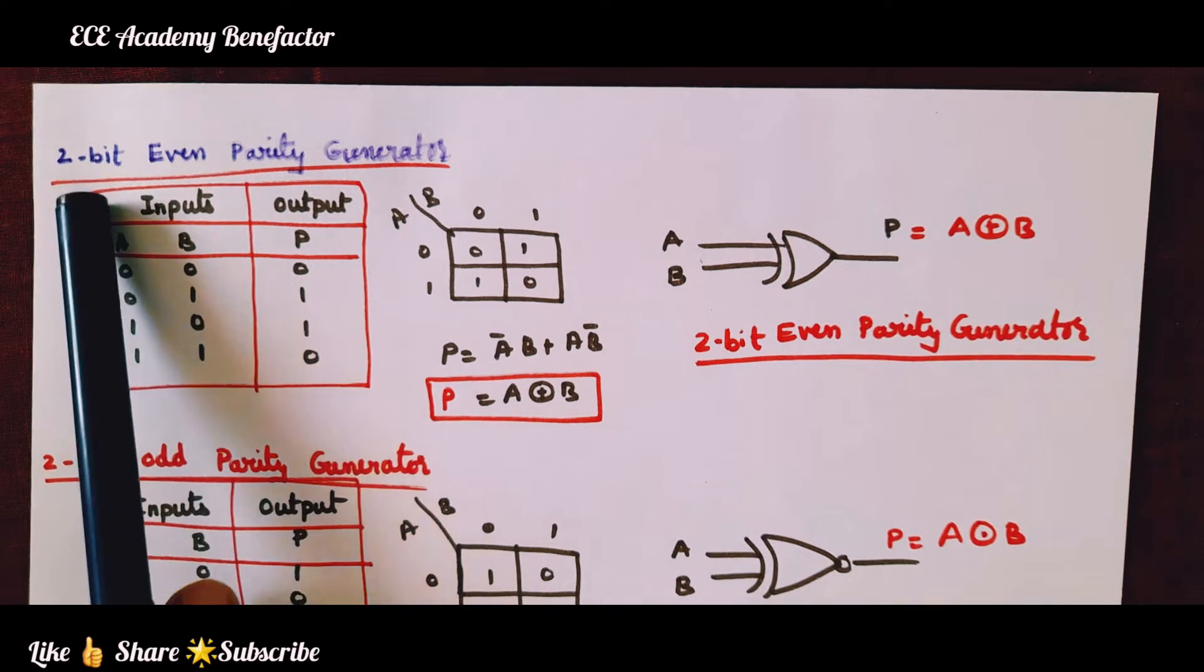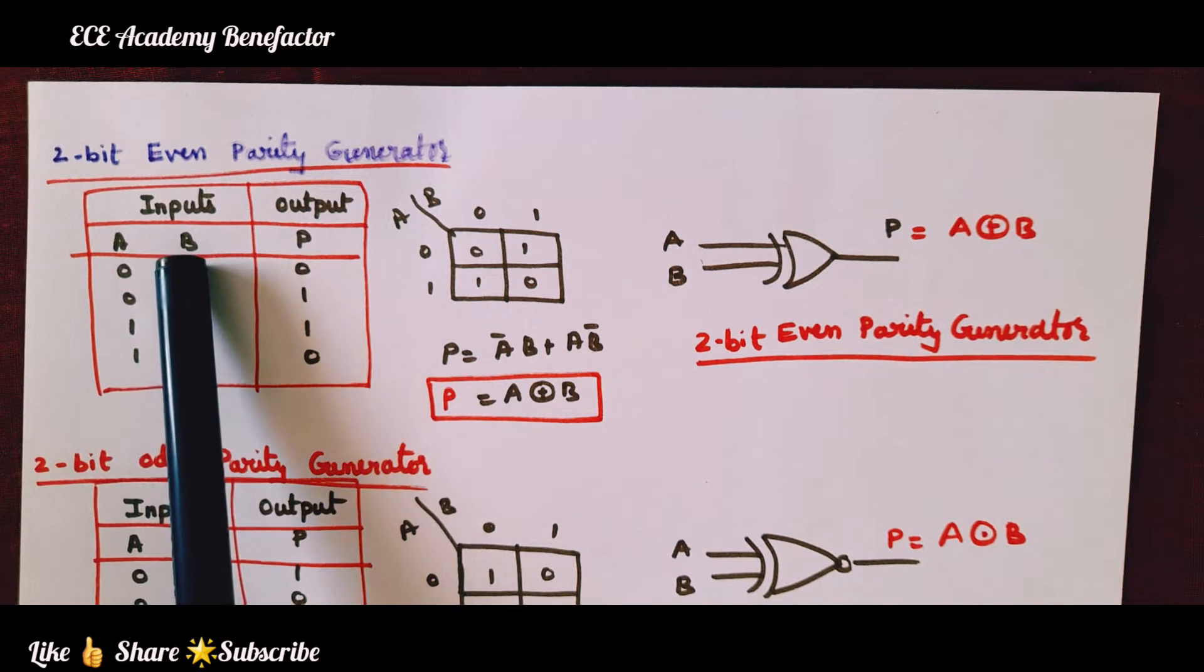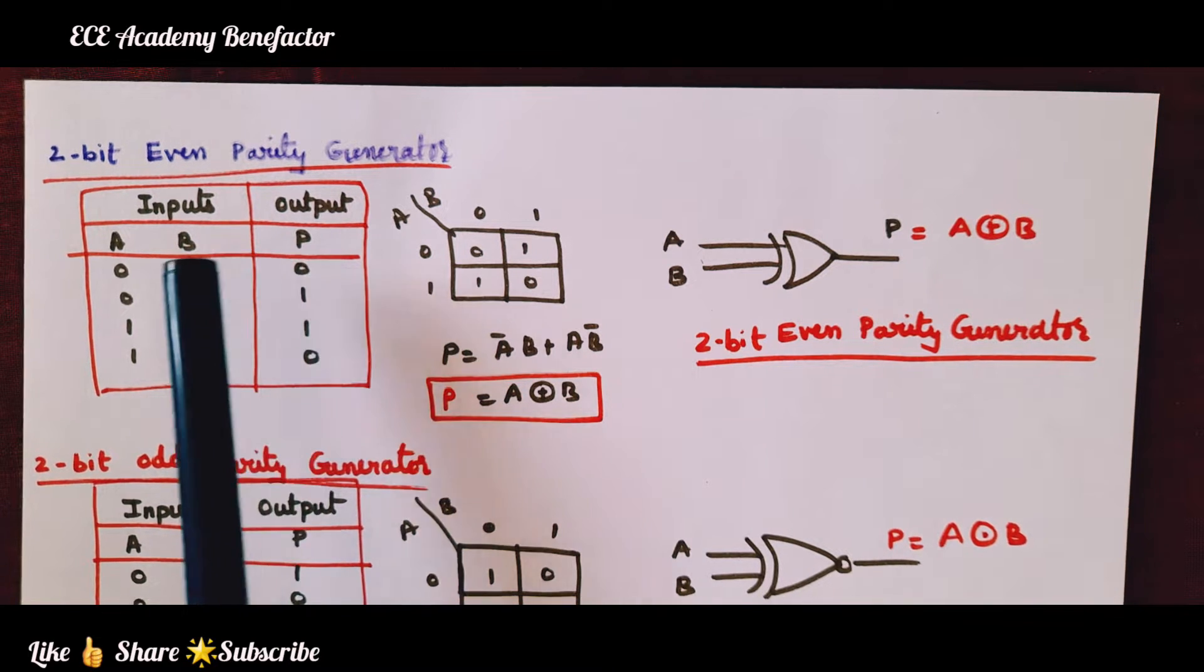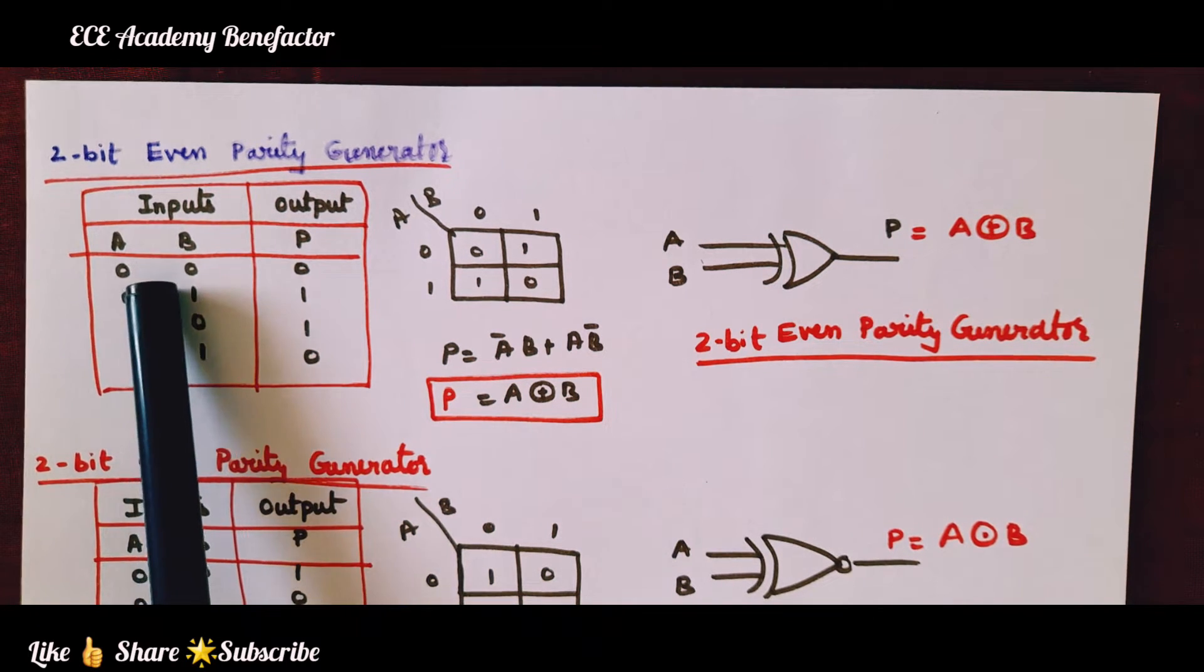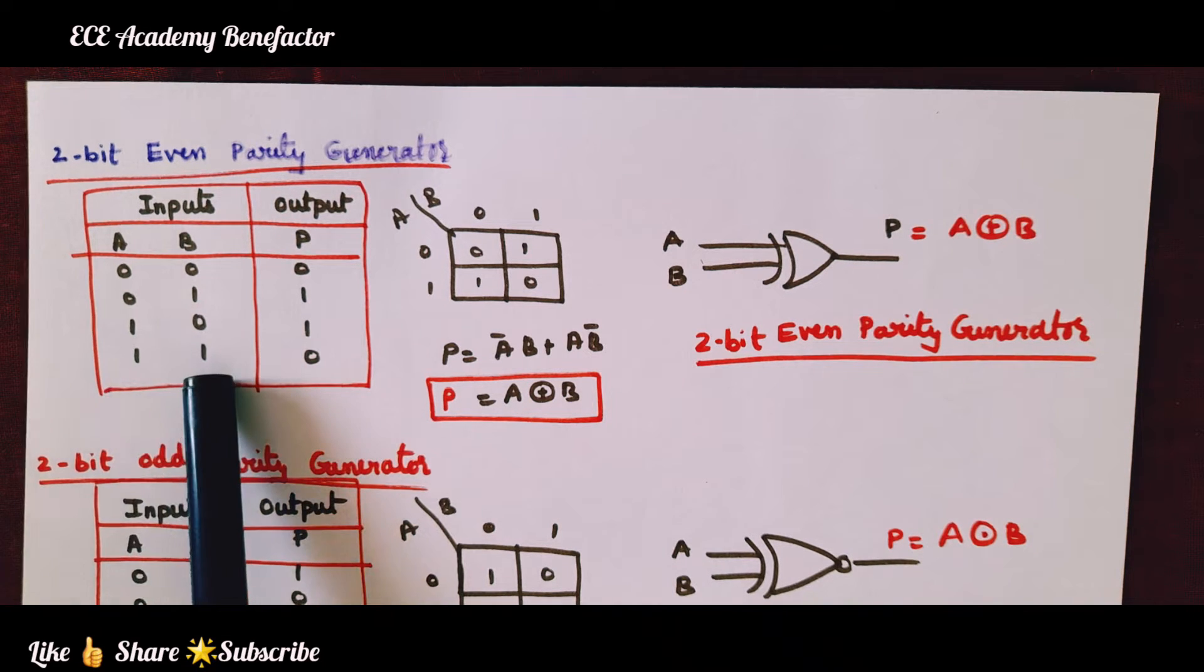What is the question? 2-bit. So we have taken the inputs 2-bit A and B, output is a parity generator P. 2 bits, so 4 combinations: 0,0; 0,1; 1,0; 1,1.